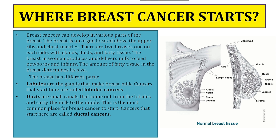There are two breasts, one on each side, with glands, ducts, and fatty tissues. The breast in women produces and delivers milk to feed newborns and infants. The amount of fatty tissue in the breast determines its size. The breast has different parts: first, lobules — the glands that make breast milk, and cancer that starts here is called lobular cancer. Second, ducts — the small canals that come out of the lobules.